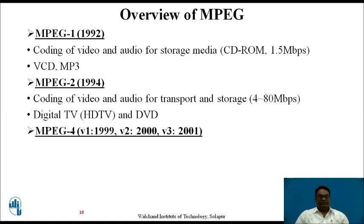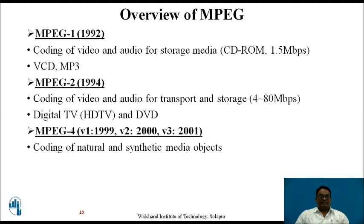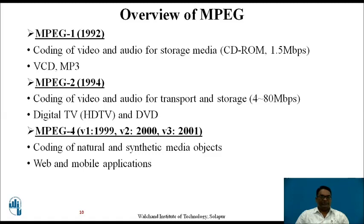MPEG 4 — the first version was developed in 1999, the second version in 2000, and version 3 was developed in 2001. It is generally used for coding of natural and synthetic media objects, with main considerations for web as well as mobile applications.